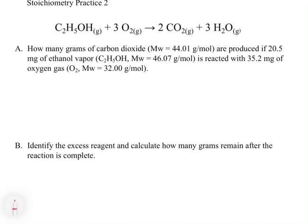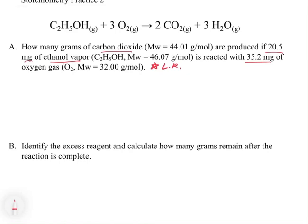Just looking at this problem, I know immediately that I have to do something specific. Before I even start the problem, I get a couple of critical pieces of information. There are two reactants in this problem — ethanol and oxygen — and I'm getting information about both. So that's an automatic tell that this is a limiting reagent problem, even though it doesn't explicitly say so. I have two reactants and I get mass information about both.